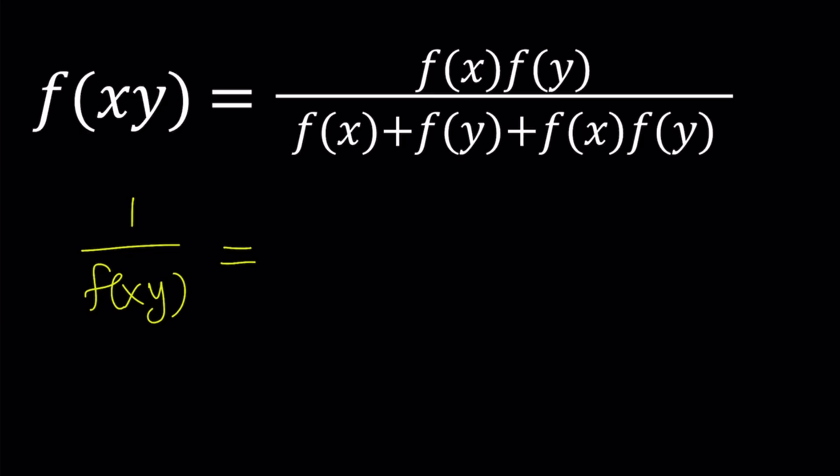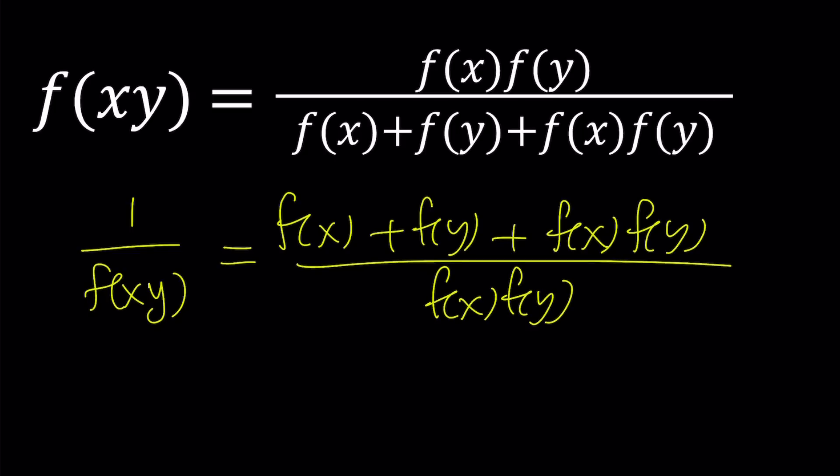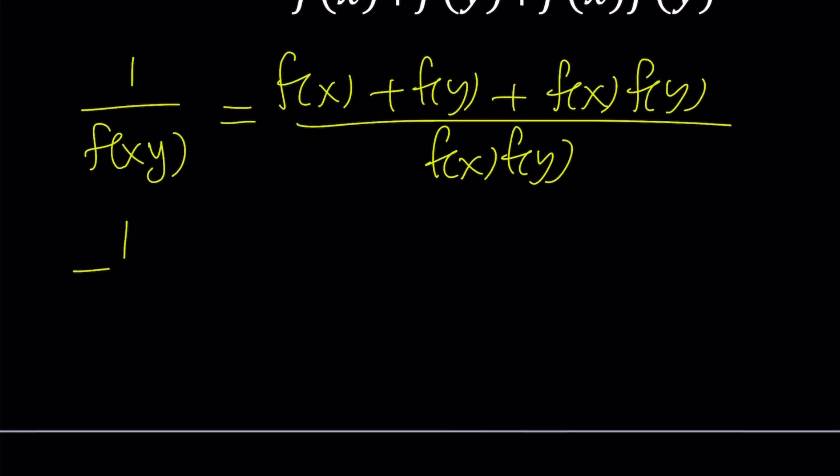1 over f of xy is going to be the reciprocal. And then this whole thing is going to be divided by a product, which is nice. Now I can go ahead and split it up. 1 over f of xy equals...